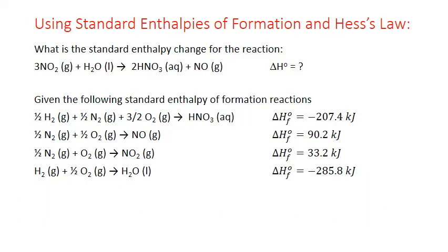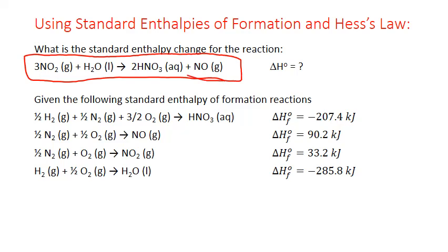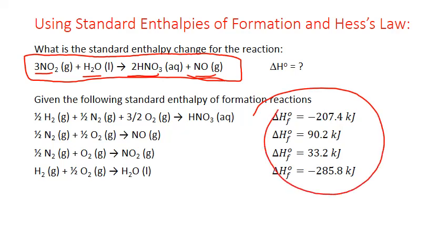It turns out that Hess's law calculations can be simplified if we use standard enthalpies of formation. A natural place to start is the reference tables of enthalpy of formations, where we can find an equation for each compound in its particular phase. The enthalpy of formation values are given for one mole of that particular compound. The formation equation always has one mole of the compound as the product, with all the elements in their most stable form at standard temperature and pressure on the reactant side.